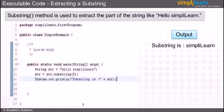On line number 10 we assign hello simply learn on str. On the next line we use substring method and pass 5 as a parameter to discard first five characters and reassign on str. On line 12 we print it on console.